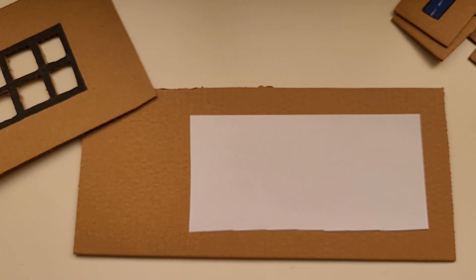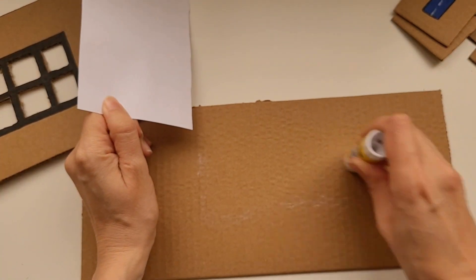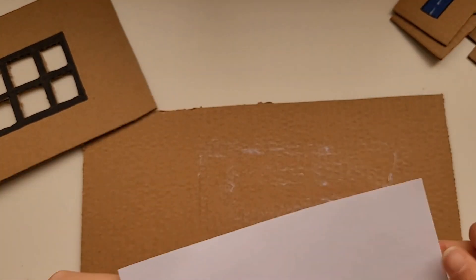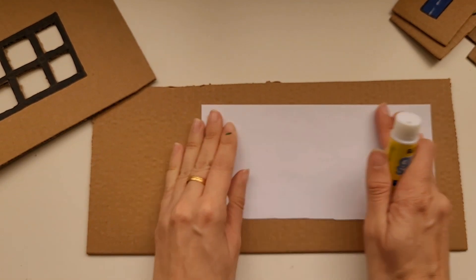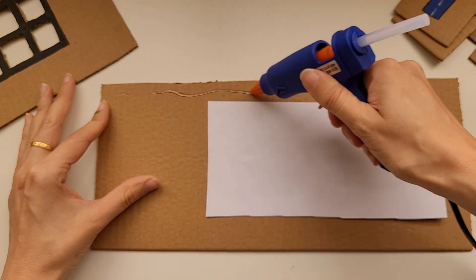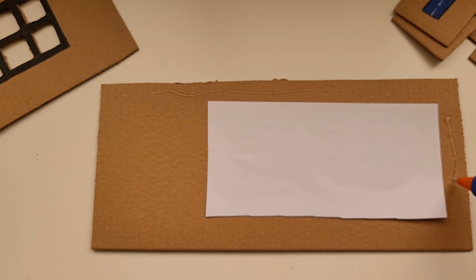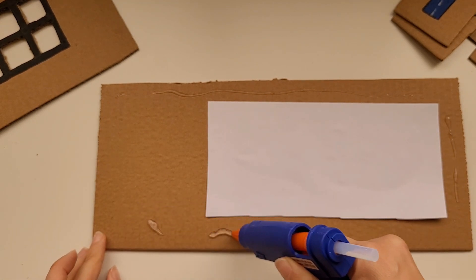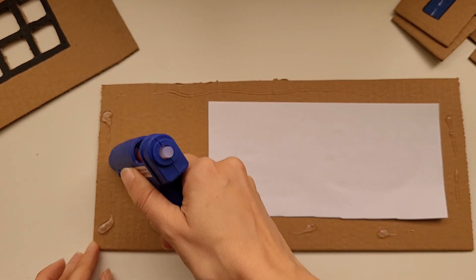After we cut out all the squares in the 10 frame, we're going to get a piece of paper that will fit underneath the cut out squares and put it on the bottom cardboard. Then we're going to use a glue gun to connect the top piece that we cut out and the bottom piece together.